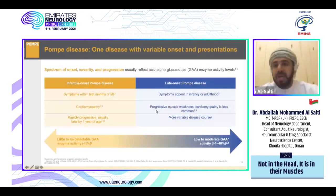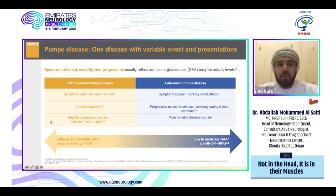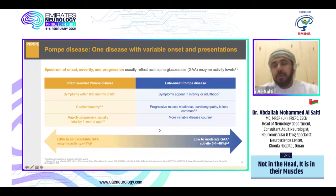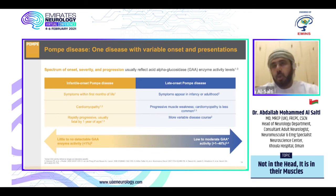Pompe disease is one disease but with variable onset and progression. The spectrum differs in onset, severity, and progression, reflected by the acid alpha-glucosidase enzyme activity level. In infantile onset, the disease is early — below 12 months — associated with cardiomyopathy. In older age groups, the disease course is more variable with variable phenotype, due to low or moderate GAA activity, usually above 1–40%.